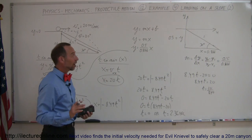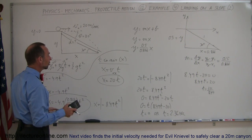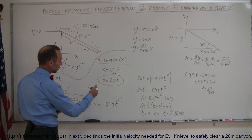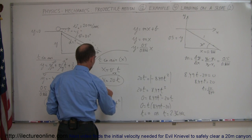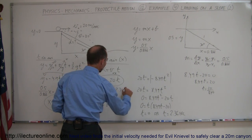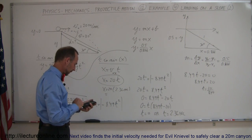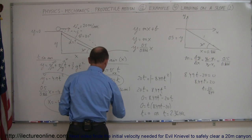So now I can go ahead and find the x distance, I can find the y distance, in this case let me find the x distance. So x is equal to 20 times 2.36 seconds, which is equal to 47.1 meters, 47.1 meters.